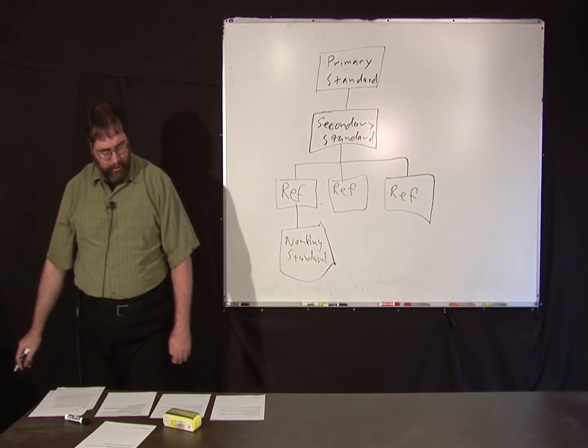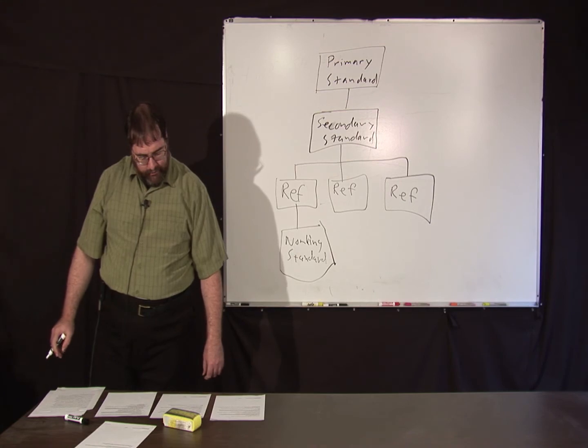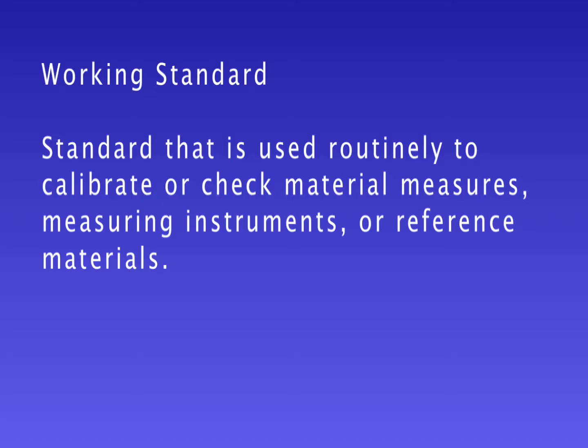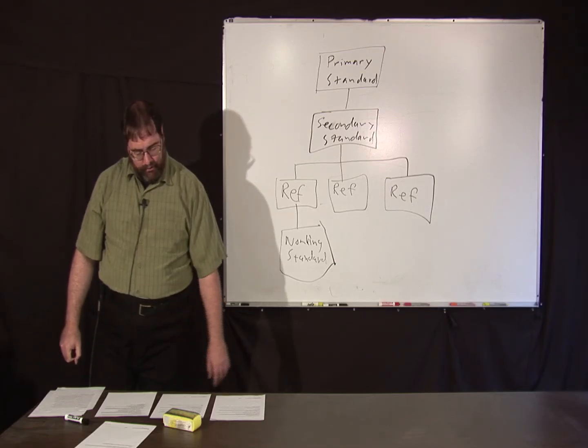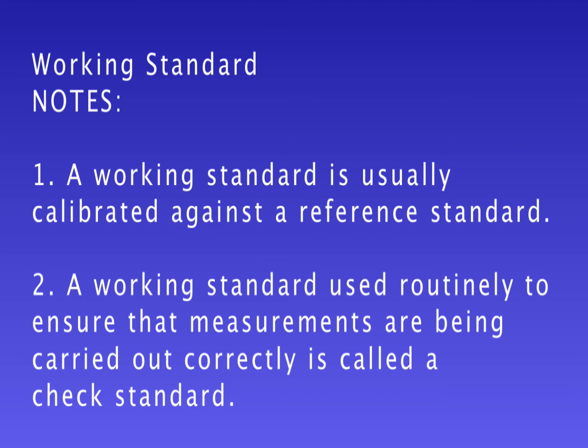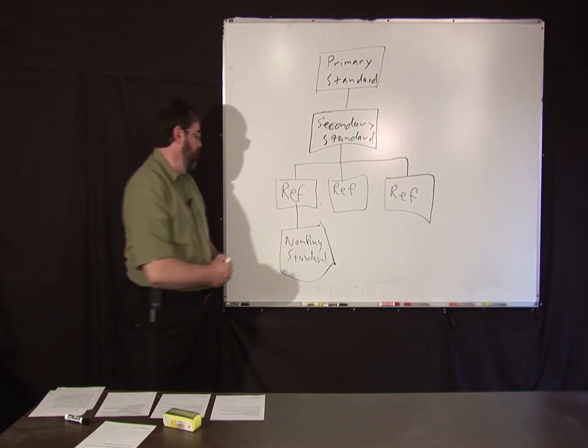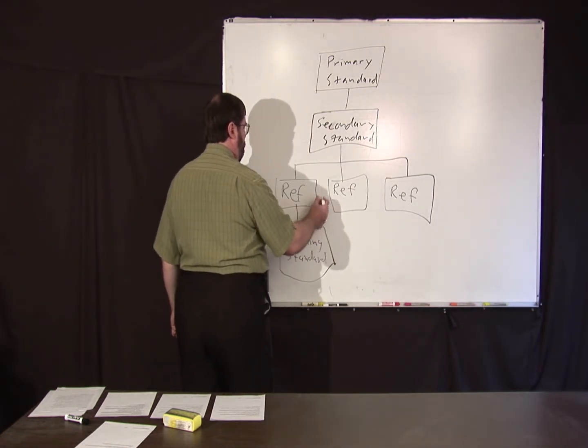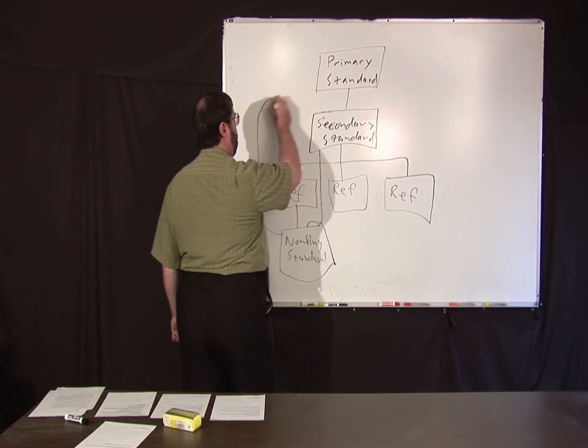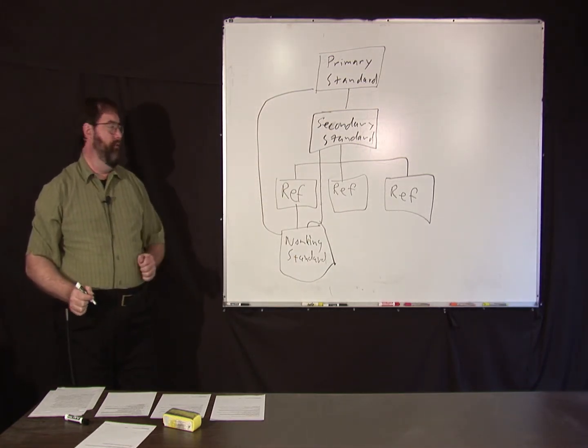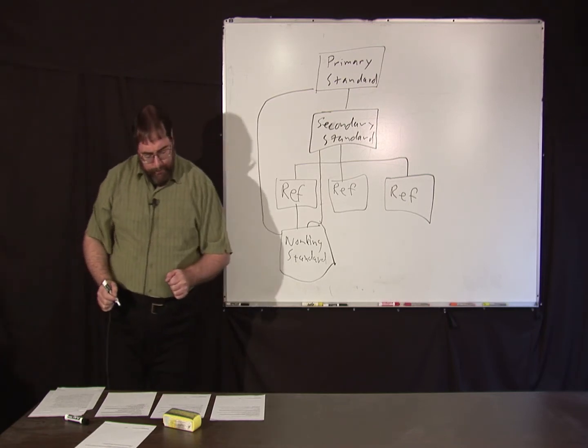Working standards are defined in the VIM as a standard that is used routinely to calibrate or check material measures, measuring instruments, or reference materials. A working standard is usually calibrated against a reference standard. A working standard that is used routinely to ensure that measurements are being carried out correctly is called a check standard. So, a check standard is something just to make sure that your process is working correctly. It could be that a working standard, if the accuracy requirements are such, it might be calibrated against a secondary standard or a primary standard, but you generally wouldn't do that unless you absolutely had to.